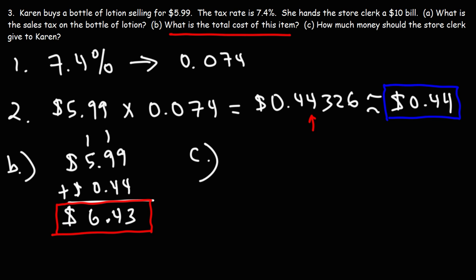Now, part C. How much money should the store clerk give back to Karen? So how much change should Karen or is Karen going to receive? All we have to do is find the difference between $10 and $6.43. There's many ways in which you can do this. You could type this in your calculator. You can perform subtraction the old way. Or you could do it mentally in your head. If you want to do it mentally, here's what I would do. I would take $10 and $6.43, I would break it up into $6.43.